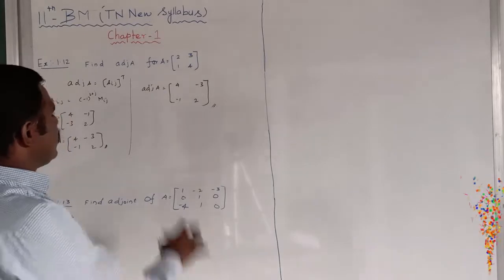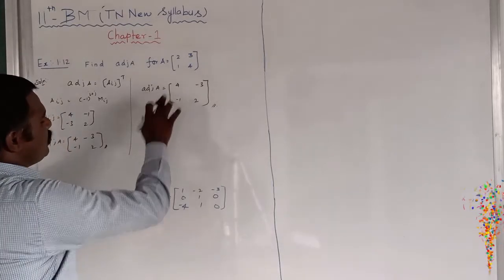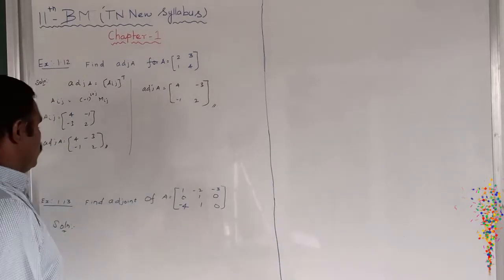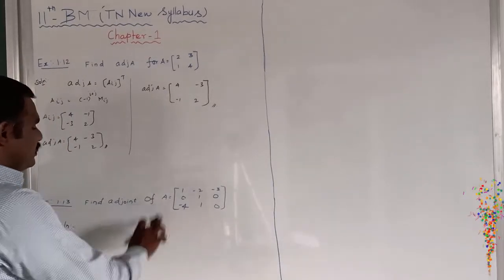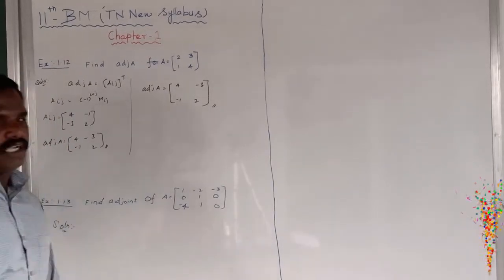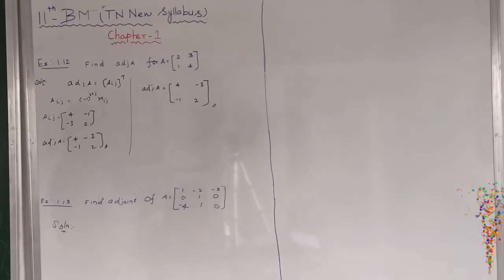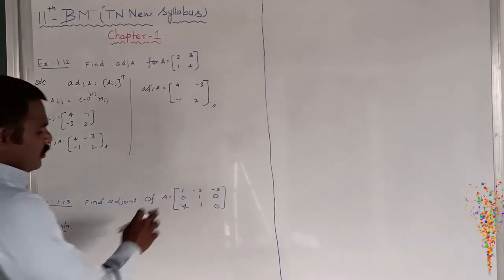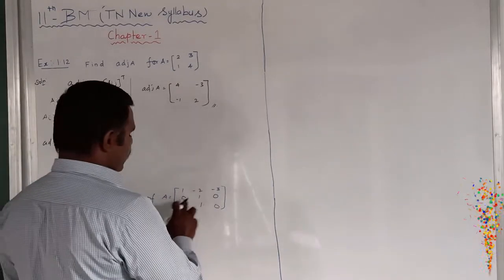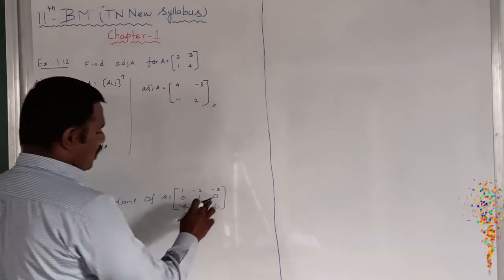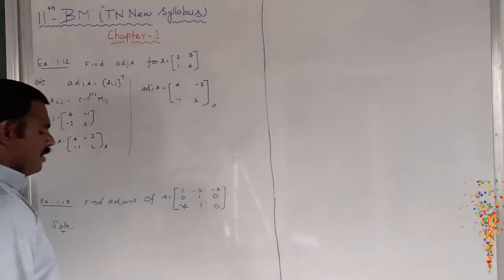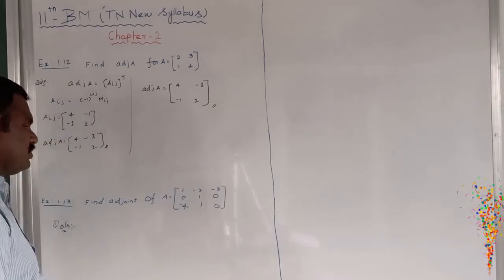Now we need to find the adjoint of A for a 3×3 matrix: A equals [1, minus 2, minus 3; 0, 1, 0; minus 4, 1, 0]. Adjoint of A equals Aij, the whole transpose.